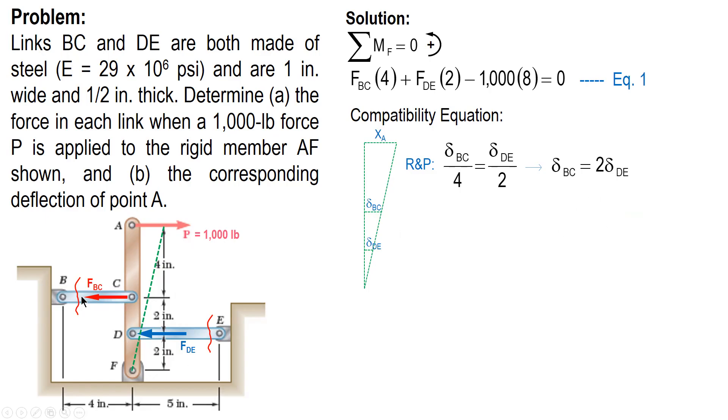We replace delta by its expression PL over AE. Now, for the cross-sectional area and modulus of elasticity, they're equal, the same. Both are made of steel, so same value of E, and both have these dimensions, 1 inch wide and 1.5 inch thick. So same area and modulus of elasticity. They only differ in internal force, I mean resisting force and length. So AE cancels. Compute 2 times 5 is 10, divided by 4, we have 2.5. So FBC equals 2.5 times FDE. This will be our equation 2.